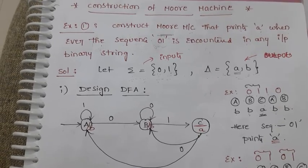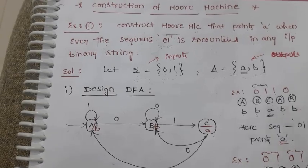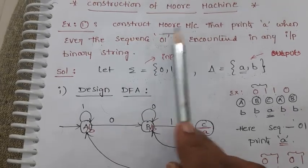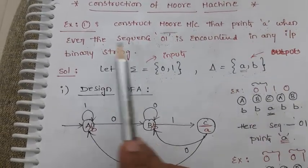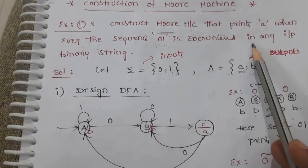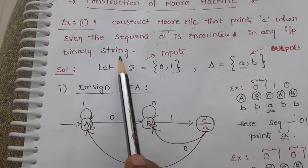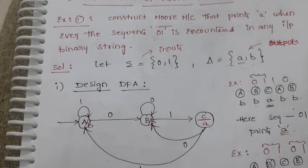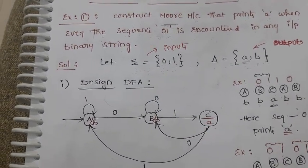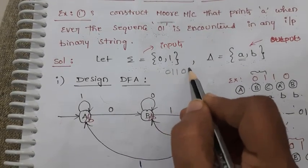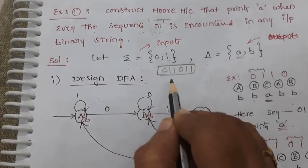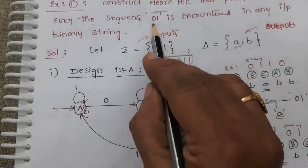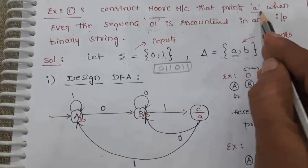In this session, let us see how to construct a Moore machine for a particular objective. The problem is: construct a Moore machine that prints A whenever the sequence 0,1 is encountered in any input binary data. The input binary data consists of zeros and ones only. So when the 0,1 sequence is encountered, we need to print A.